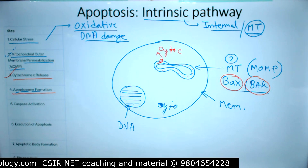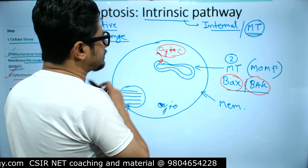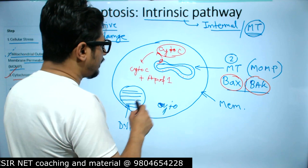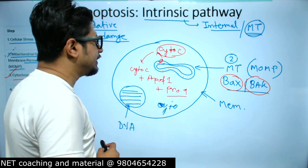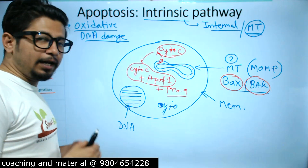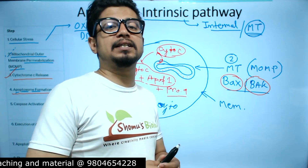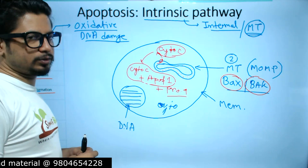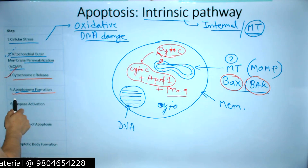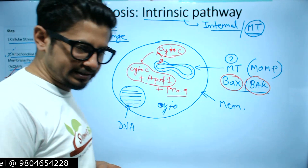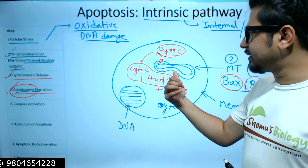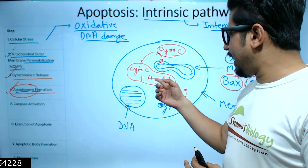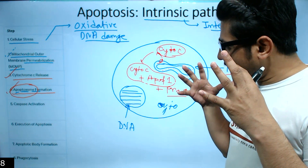The fourth step is apoptosome formation. When cytochrome c is released into the cytoplasm, it combines with Apaf-1 and pro-caspase-9 — both of which are present in the cytosol — to form what is known as the apoptosome complex. So the apoptosome complex is formed when cytochrome c gets released into the cytosol and associates with Apaf-1 and pro-caspase-9 together.